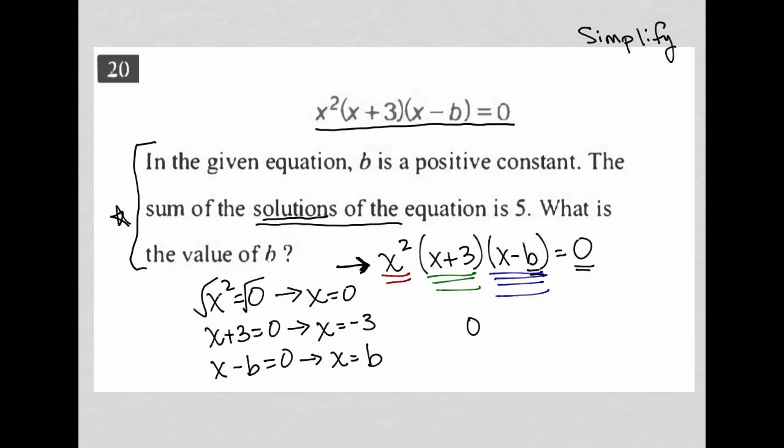So, there are my three solutions: zero, negative three, and B. Now, the question says that the sum of the solutions is equal to five. So, that would mean that zero plus negative three plus B is equal to five.